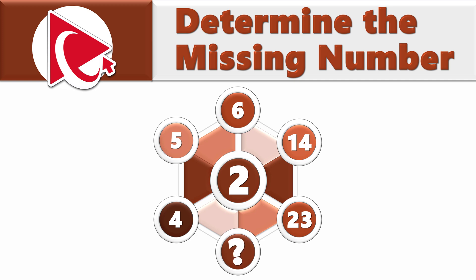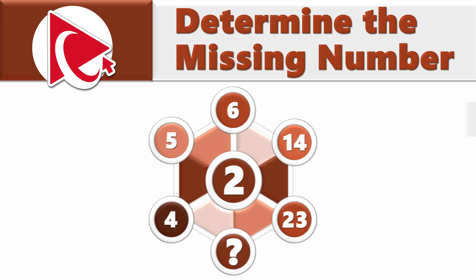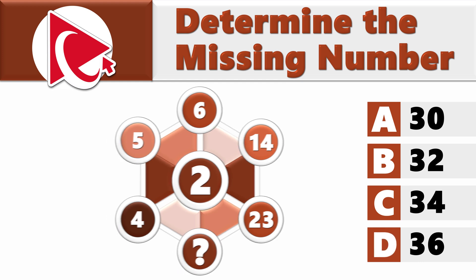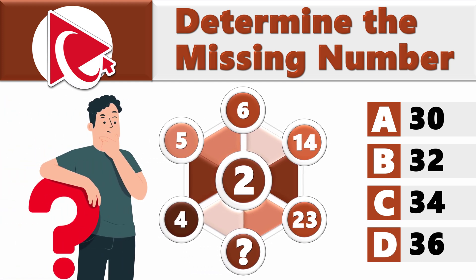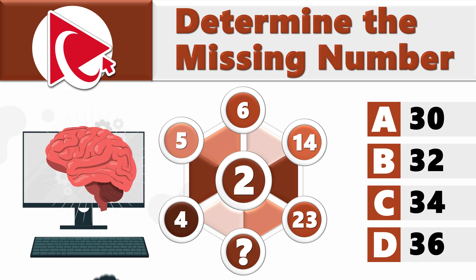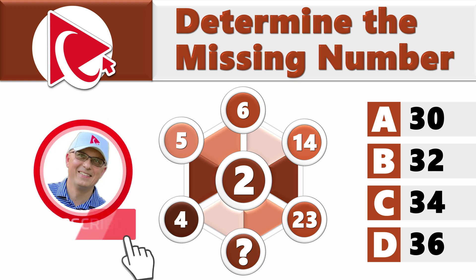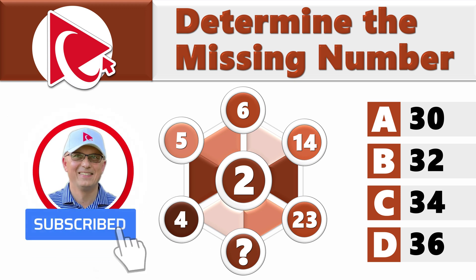You need to calculate and select the missing number out of 4 possible choices. Choice A, 30. Choice B, 32. Choice C, 34. And last but not least, choice D, 36. You need to solve this challenge solo and post your solution in comments. And once you solve this challenge, I promise you that you will feel like a freshly rebooted computer and will be ready for new heroic adventures. Thanks for trying and good luck solving this challenge.